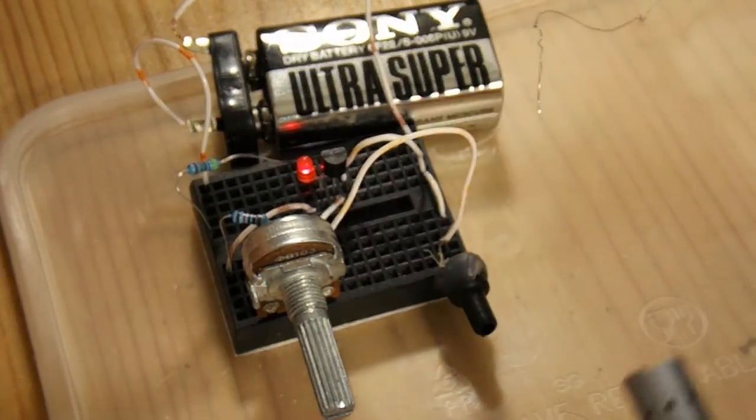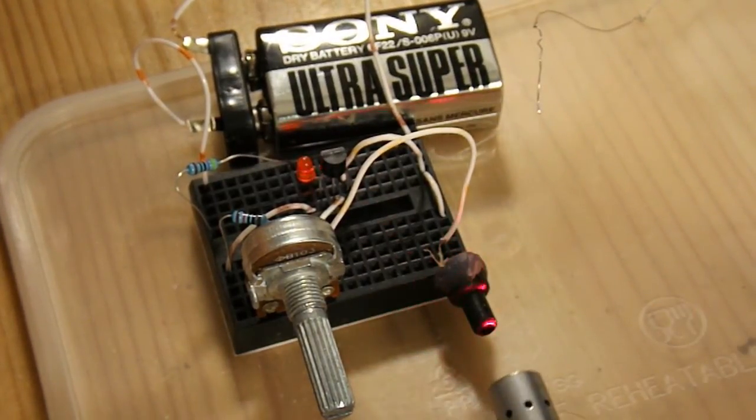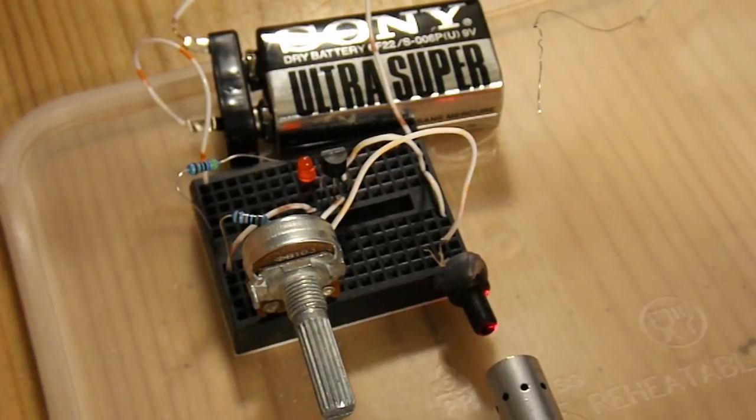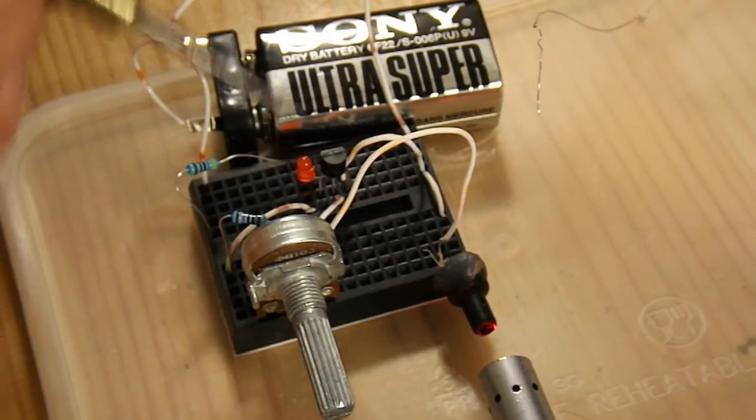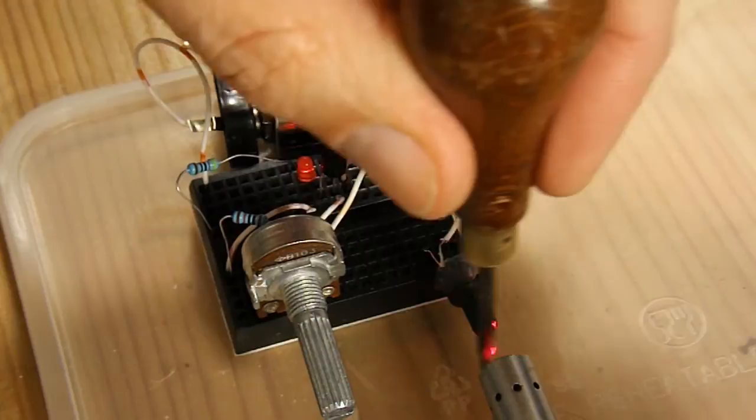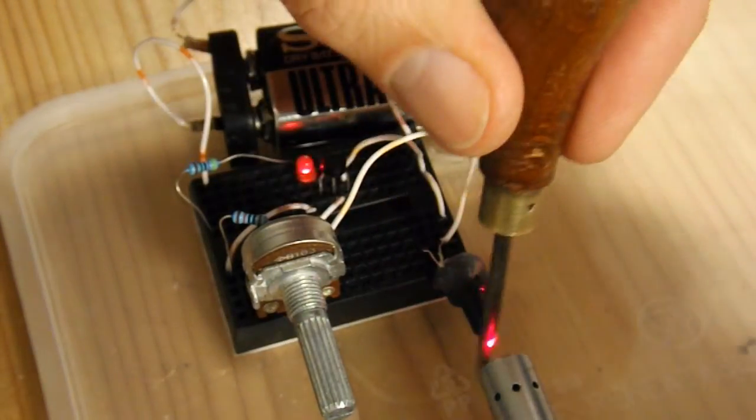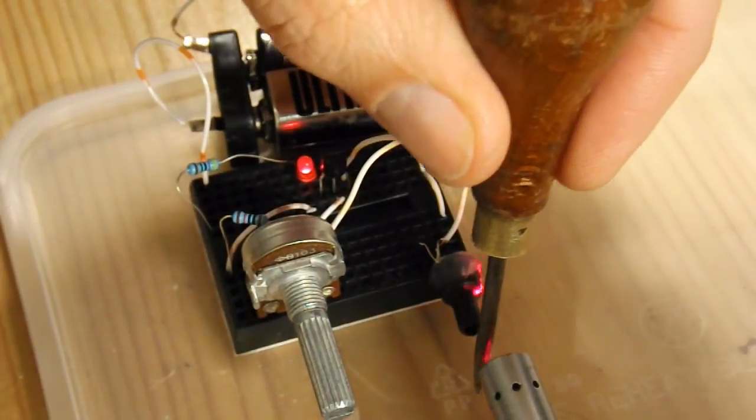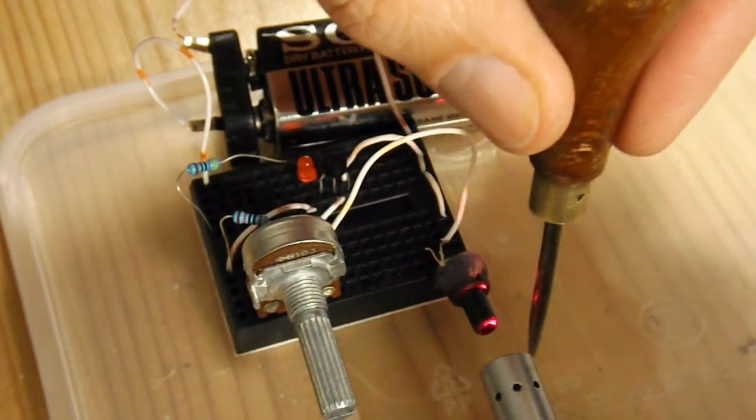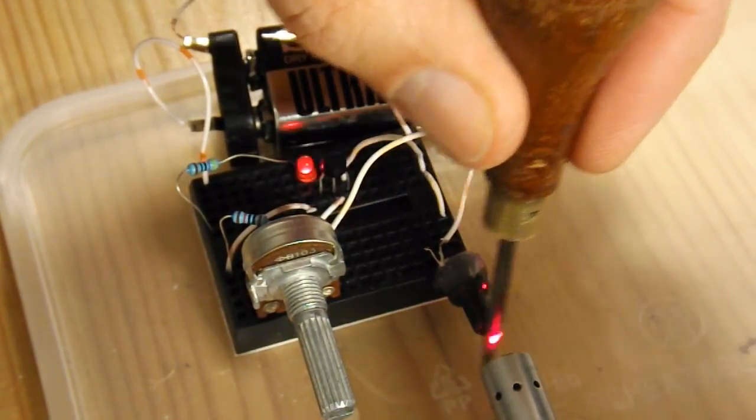If I shine my laser pointer straight at the LDR the LED goes out, and if I move something in front of it, you can see we're triggering the LED.